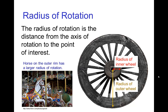For rotation, the distance we'd be interested in is the radius of the rotation. In this wheel, we might look at the radius of the inner wheel or the outer wheel. For the merry-go-round, we might be interested in the motion of horses towards the inside of the track or the horses on the outside of the track.